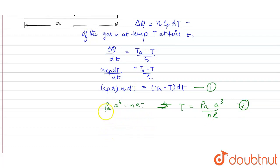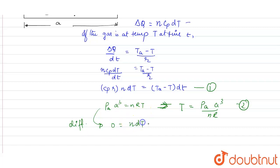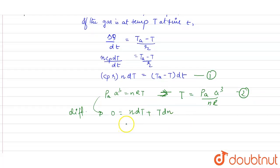Since Pa and A³ — that is, pressure and volume — are constant, after differentiating Pa·A³ = nRT, both n and T are variables. So we get 0 = n·dT + T·dn, which gives us n·dT = −T·dn. Let this be equation 3.